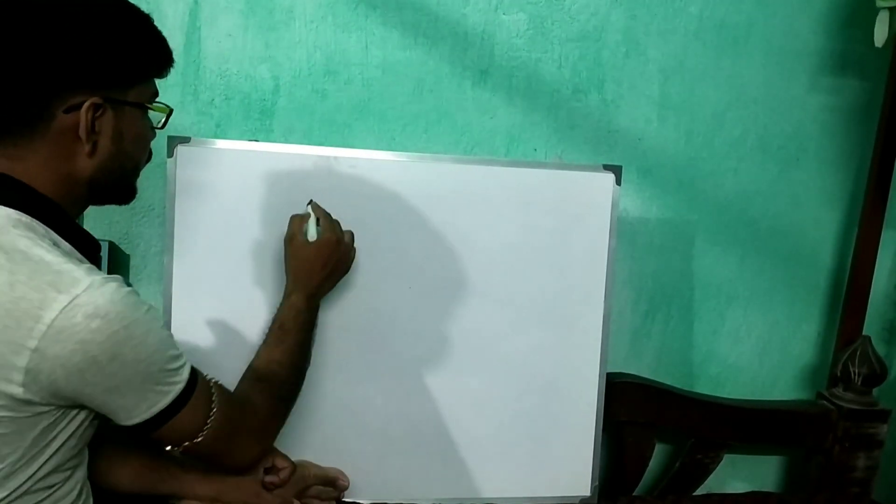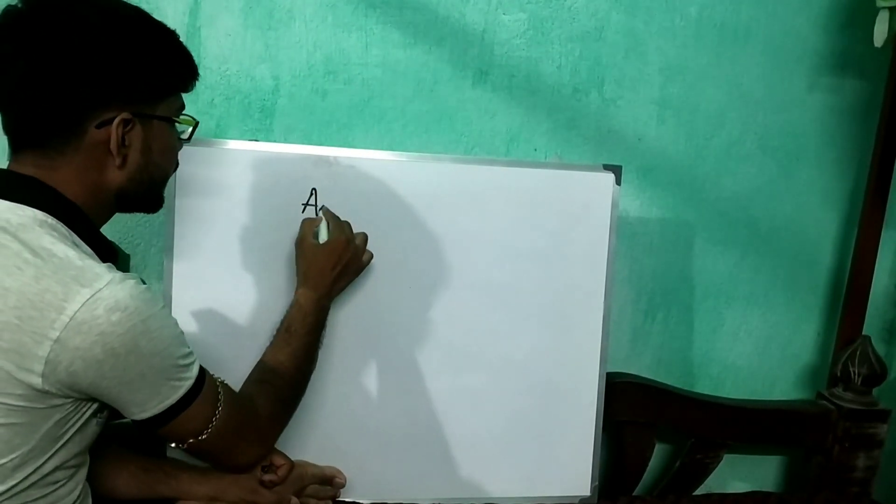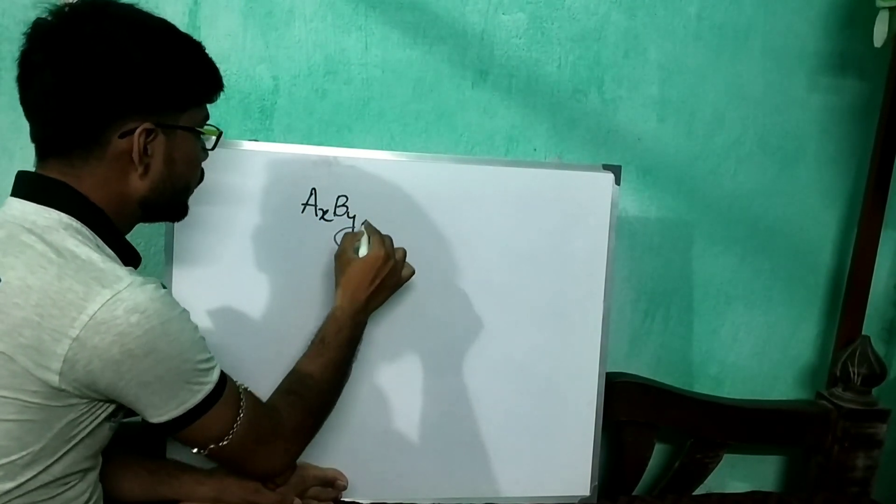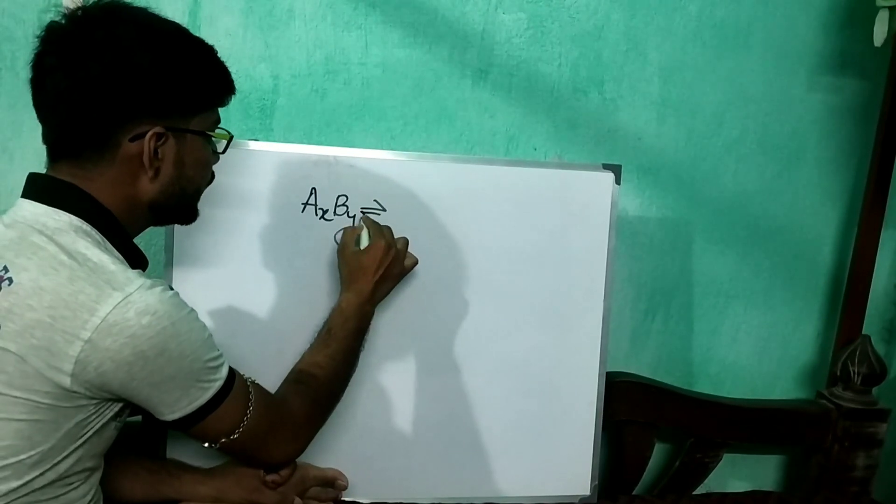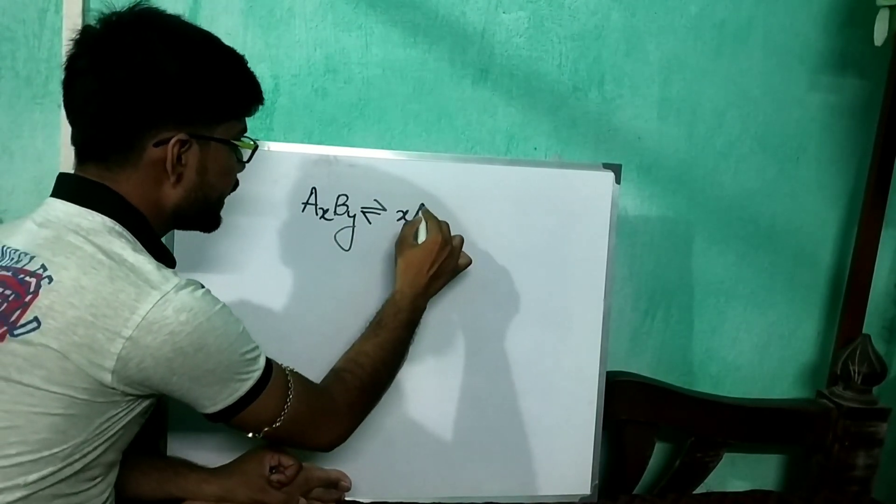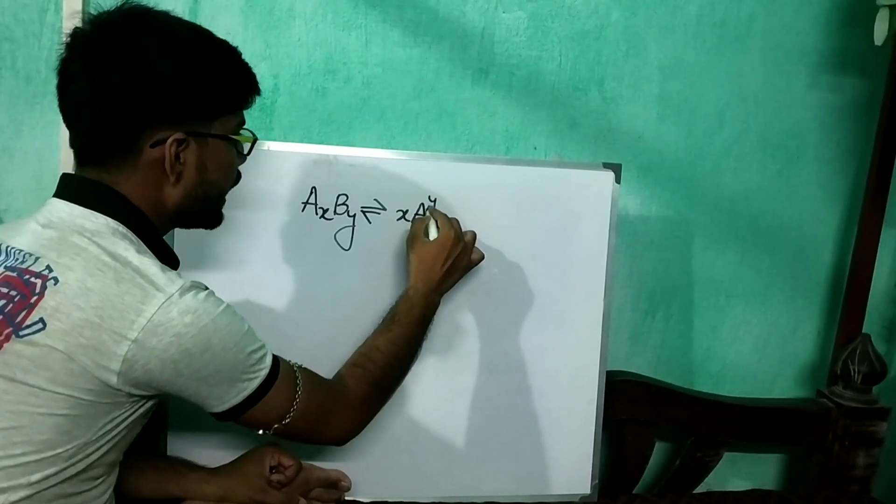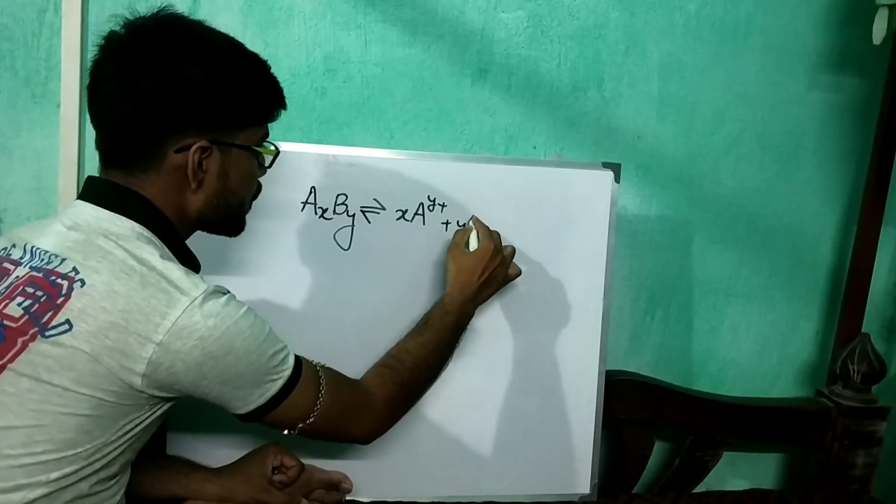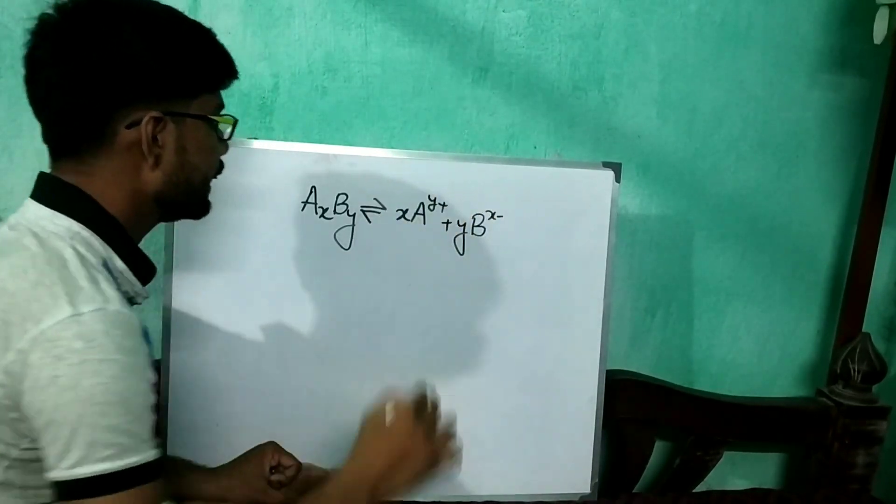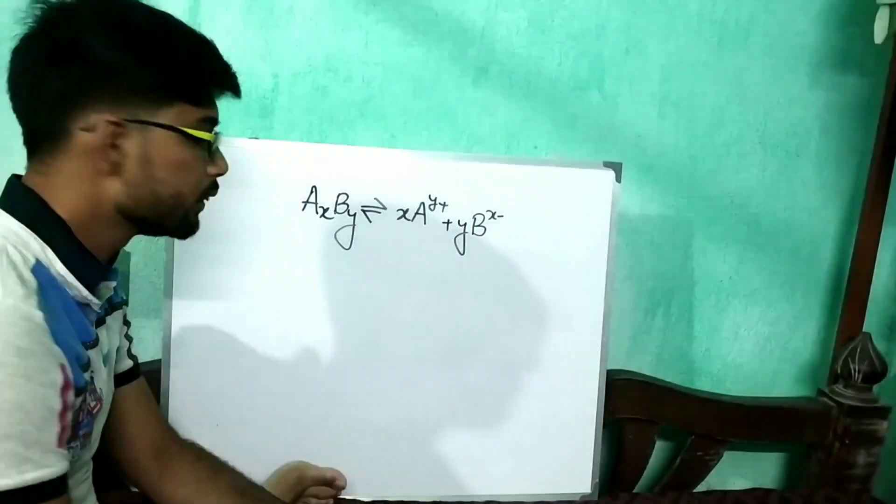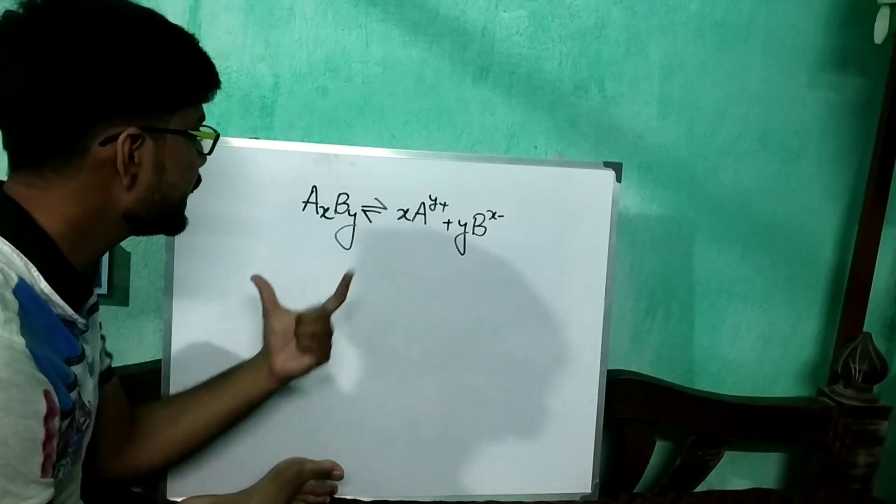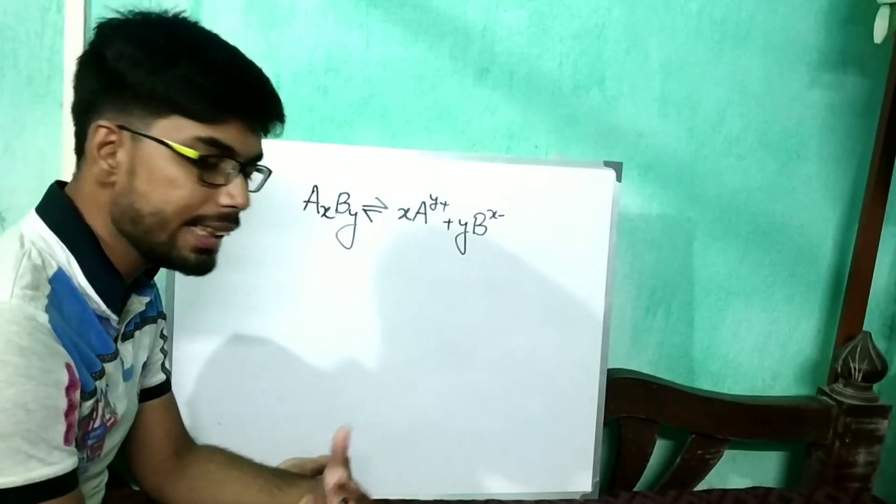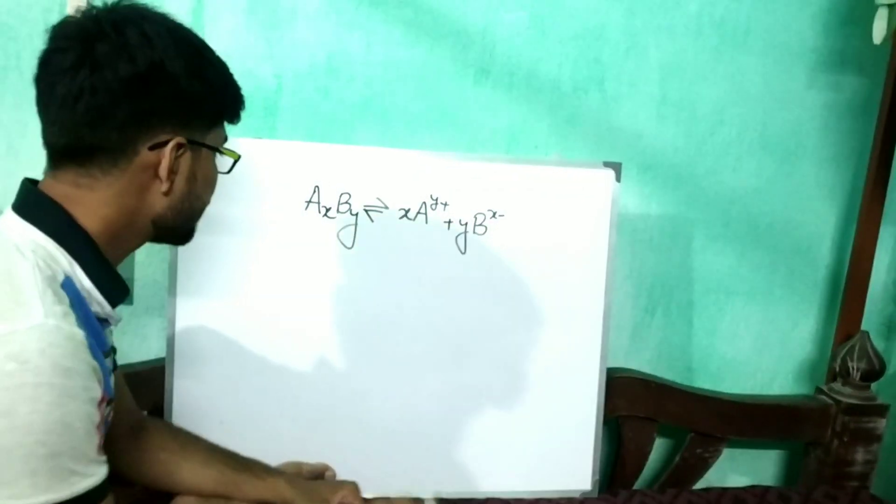Suppose I am designing a compound, that is AXBY. When it will ionize, it will give XAY+ plus YBX-. Okay, so using this formula we can ionize any compound, any acid, any base, any compound.